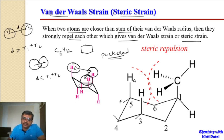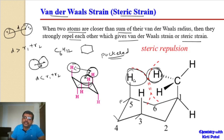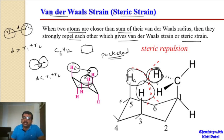If one hydrogen in the axial position is replaced by a methyl group (CH3), then the three hydrogens of the methyl group are in close proximity to the neighboring axial hydrogens. These hydrogens will be sterically hindered, resulting in steric repulsion between them. This repulsion is called steric strain or van der Waals strain.